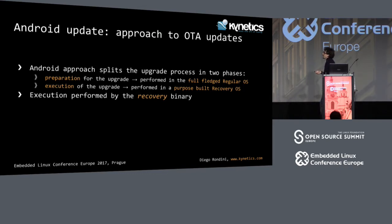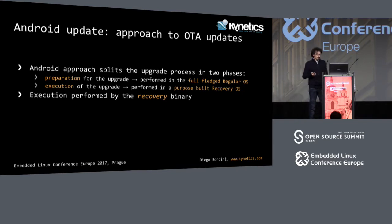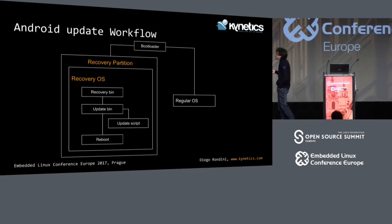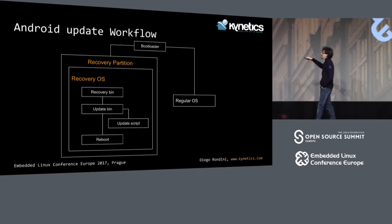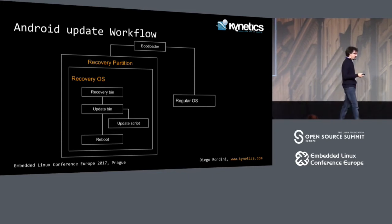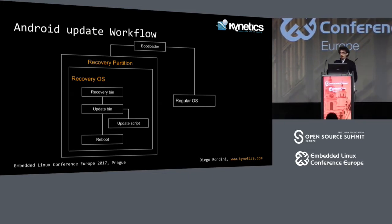So let's see how Android does updates in single-copy. Basically you have two steps. The first step is the preparation of the upgrade — you run in the regular OS, which is what you usually use on your smartphone, and then the device is rebooted to a special system, which is the recovery OS. You are in the regular OS, you get rebooted to the special recovery OS, which has one binary able to read your update file, verify it, unpack it, and then run several binaries and scripts.